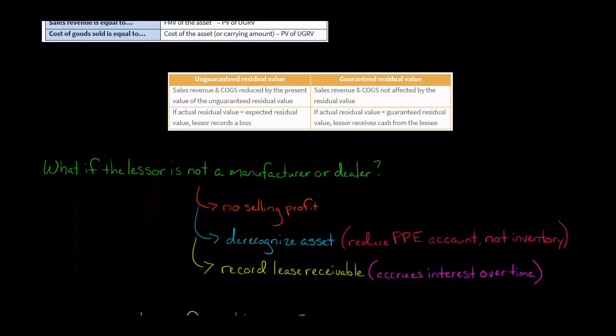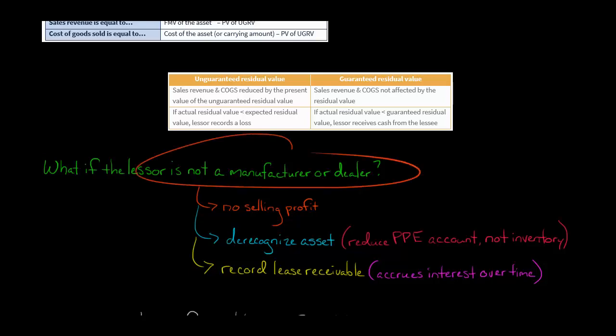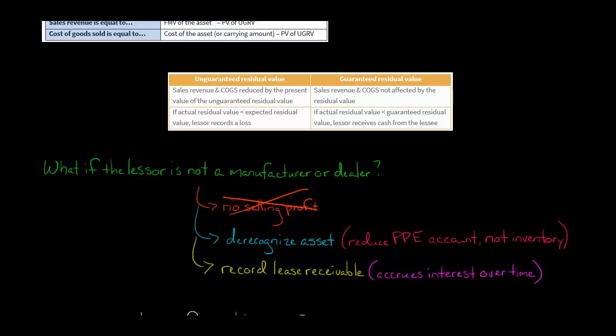What if the lessor is not a manufacturer or dealer? If we're talking about a bank or similar entity — the lessor has structured a lease where they are not selling anything — it's basically the entire thing is a financing transaction. Then there would not be any selling profit recognized upon commencement of the lease. You wouldn't have any sales revenue or cost of goods sold. But you would still de-recognize the asset.